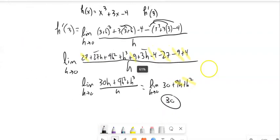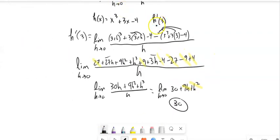So I would say, going back to my original problem here, h prime of 3, the derivative of h when x is 3, is 30.